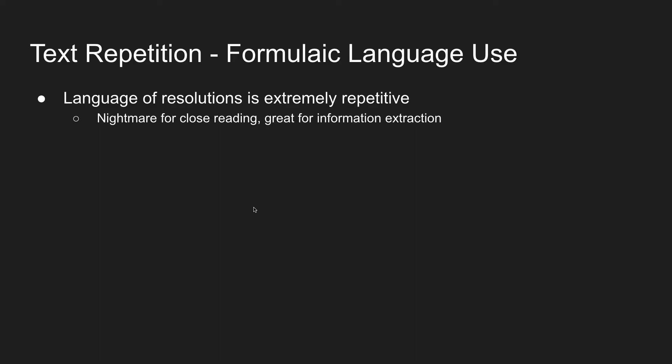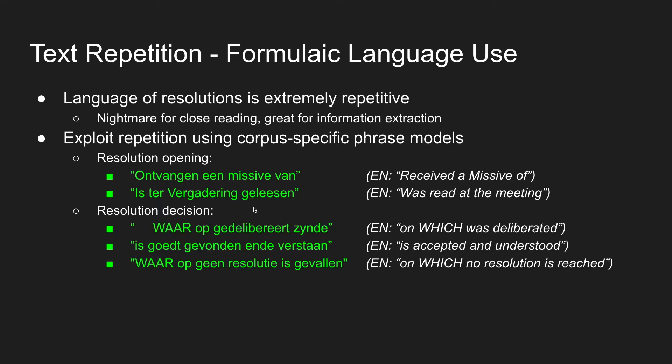One of the key characteristics of this corpus is that the language use is extremely repetitive. For close reading, this is an absolute nightmare because it is difficult to keep your attention on the text — it's even difficult to tell the differences between individual resolutions because they look so similar. But from an information extraction point of view, this is like being a kid in a candy store. We use corpus-specific phrase models that capture these formulas with which we can find structural elements, for instance the resolution openings.